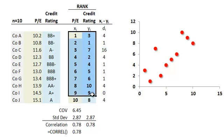So now both variables are expressed in terms of rank. PE, lowest to highest, credit rating, lowest to highest.